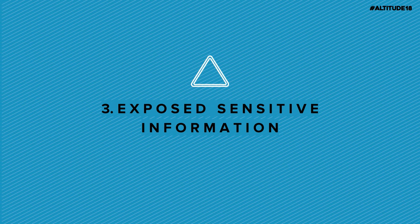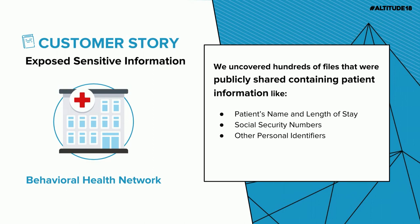Our third big risk is exposed sensitive information. This most commonly means exposed personal information like social security numbers or PII, exposed payment information like credit card numbers, or keywords important to you because they relate to internal projects. While those things aren't inherently risky, they certainly can be when combined with public sharing. This next story is one that sits with me personally — I came from a healthcare IT consulting background, so working with this customer was really the moment where I understood the value BetterCloud could bring.